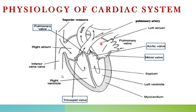When the left atrium contracts, the mitral valve opens and oxygenated blood passes to the left ventricle. When the left ventricle contracts, the aortic valve opens and that pure blood is pumped to the aorta, and from the aorta it is supplied to the various parts of the body through the circulatory system.